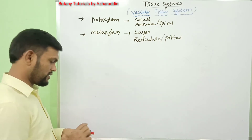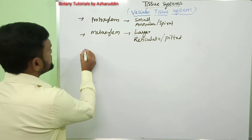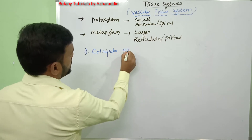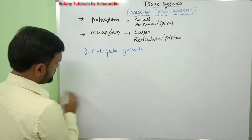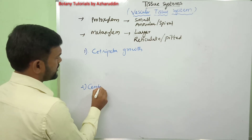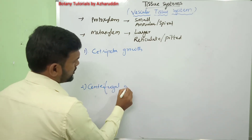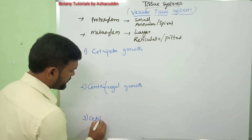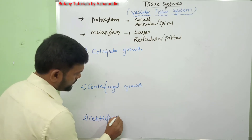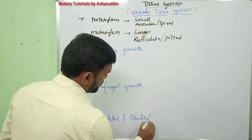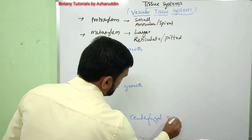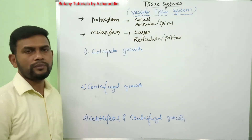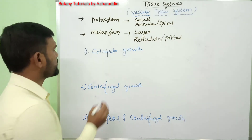The three methods of xylem differentiation from procambium are: first, centripetal growth; second, centrifugal growth; and third, centripetal and centrifugal growth combined. In these three ways, xylem differentiates from procambium to form xylem elements.